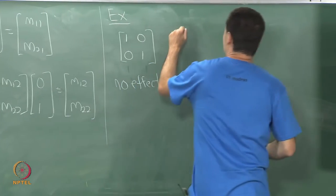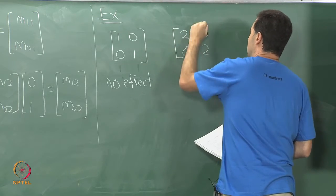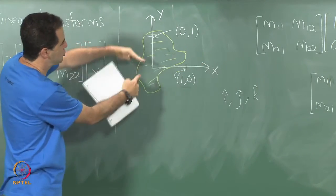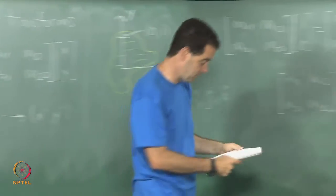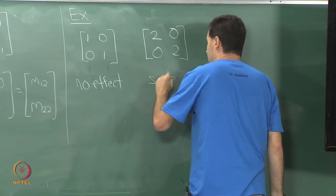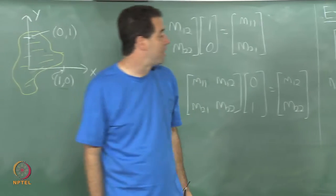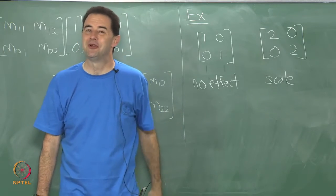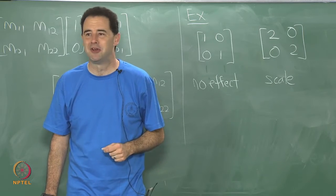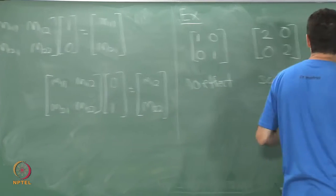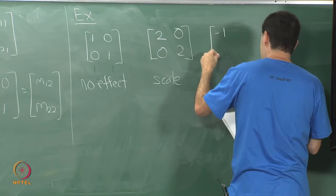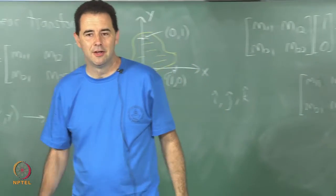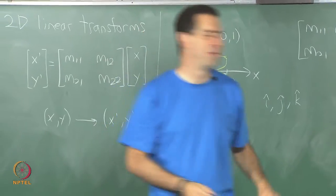Let us try another one. What if I have the matrix with 2, 0, 0, 2? It just scales — stretching along the x-axis by a factor of 2 and along the y-axis by a factor of 2. If I pick one-half instead it will shrink. I could put different numbers for different axes and get different stretchings, distorting the aspect ratio. What about negative 1, 0, 0, 1? That gives a mirror image — a flip — which is not something I consider satisfying from the perspective of rigid body transformations.